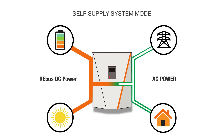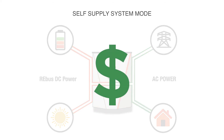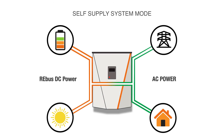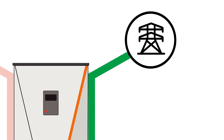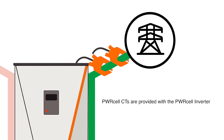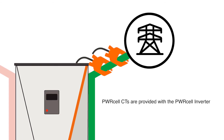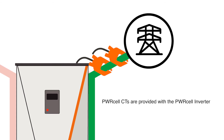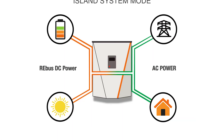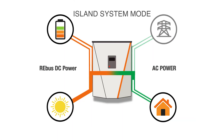The self supply system mode prioritizes load support while grid power is available. An installer will usually select self supply mode for a customer whose priority is cost savings, as it will maximize the utilization of self-generated solar energy. This mode relies on current transformers installed at the main entrance to determine how much local demand exists. If a grid excursion occurs, the PowerCell system will still provide backup power, although less battery energy may be available.